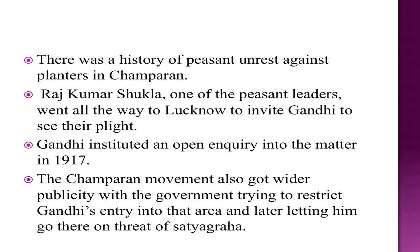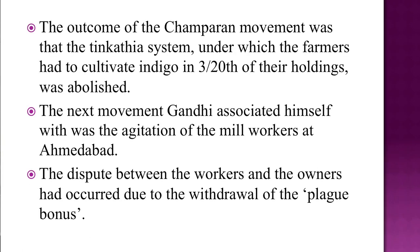The Champaran movement got wider publicity with the government trying to restrict Gandhi's entry into that area and later letting him go there on the threat of Satyagraha. The outcome was that the Tin Katia system, under which the farmers had to cultivate indigo on 3/20th of their holdings, was abolished.